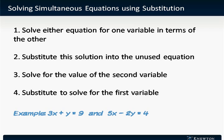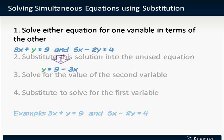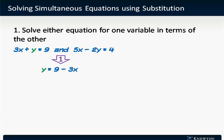Let's take a look with the example 3x plus y equals 9 and 5x minus 2y equals 4. The first step is to solve either equation for one variable in terms of the other.